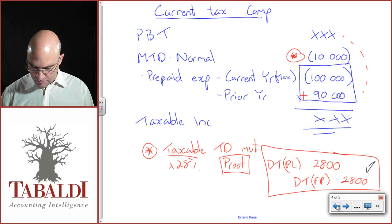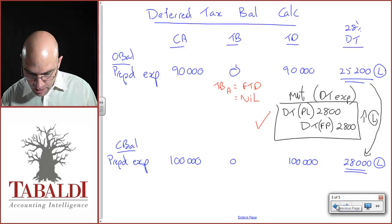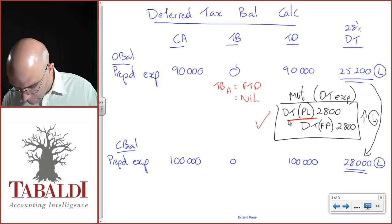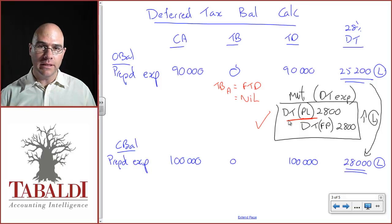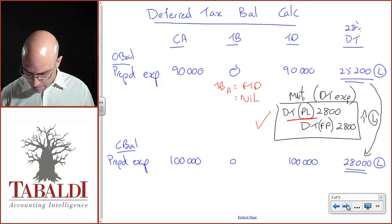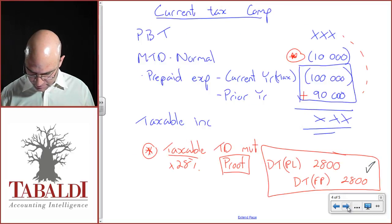That 2,800, if I go back to my deferred tax movement journal, I debited profit and loss. If I debit a deferred tax expense, expenses get bigger on the debit side. Therefore, that is a positive in this deferred tax expense note.